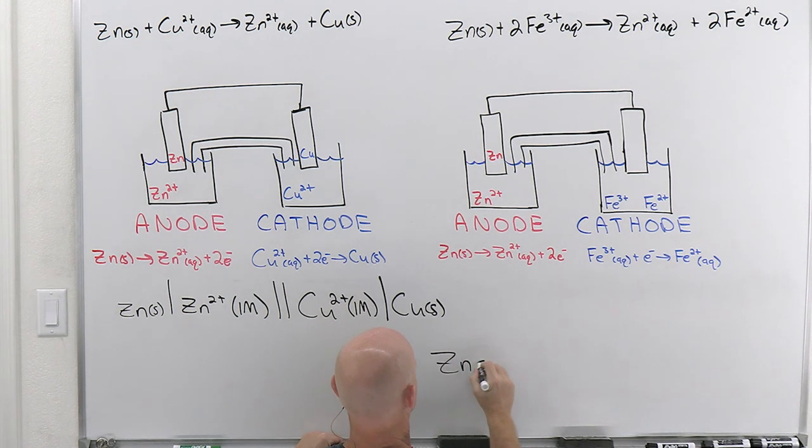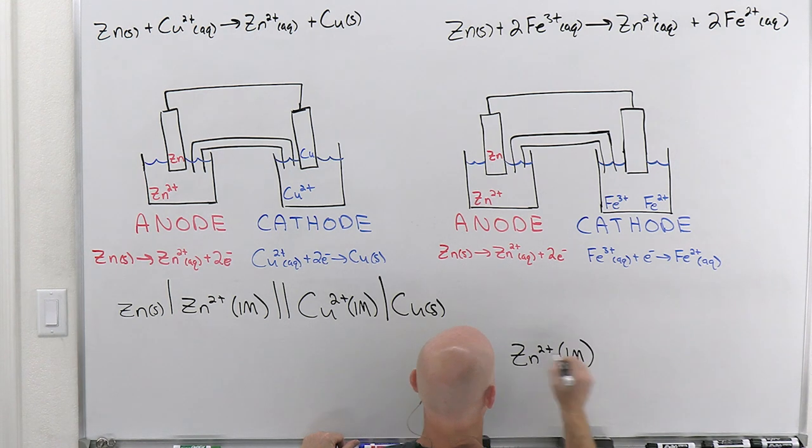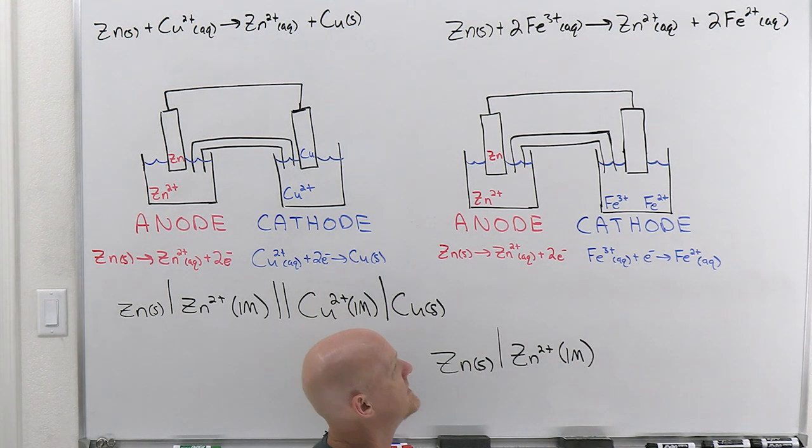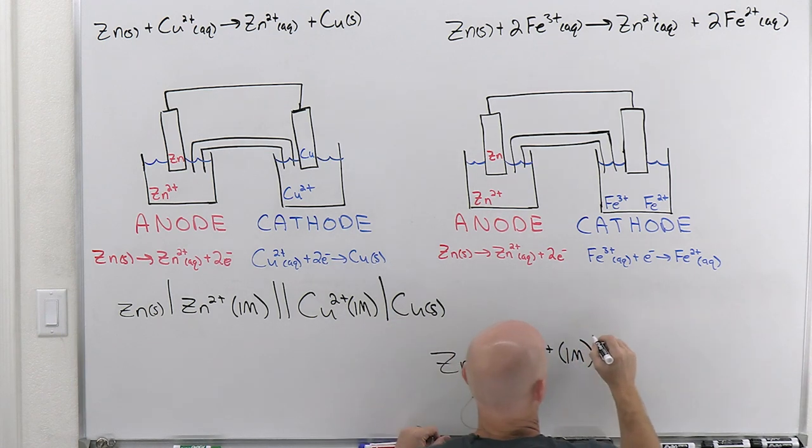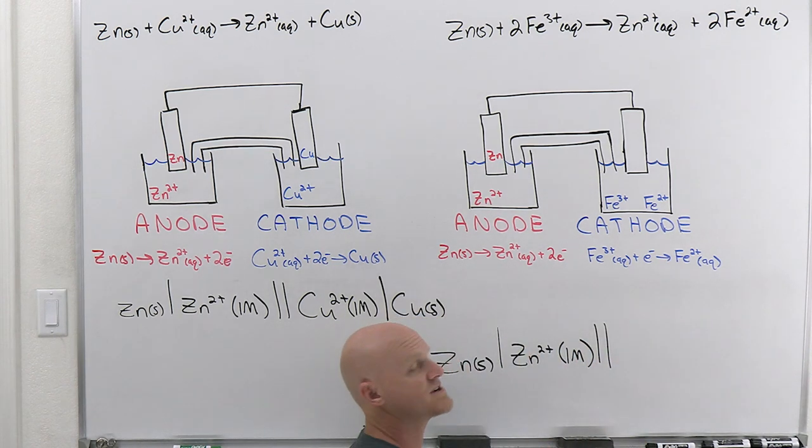I'm going to have it exactly looking like so. We'll start there. So we've got the zinc, zinc 2+, and at standard conditions, that would be one molar. Put a single slash between them. And then before we write the cathode, that's where we'd have the double slash, representing the salt bridge.